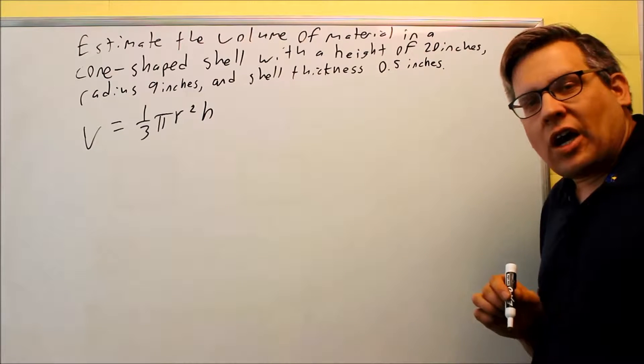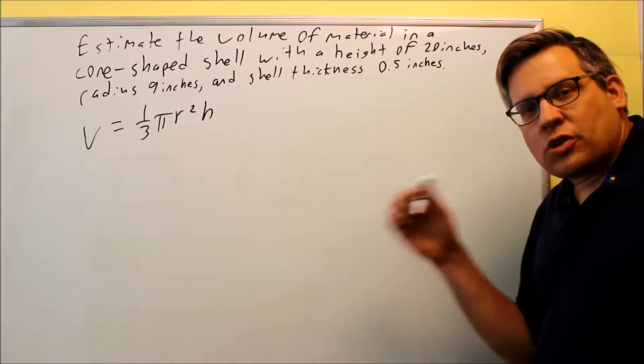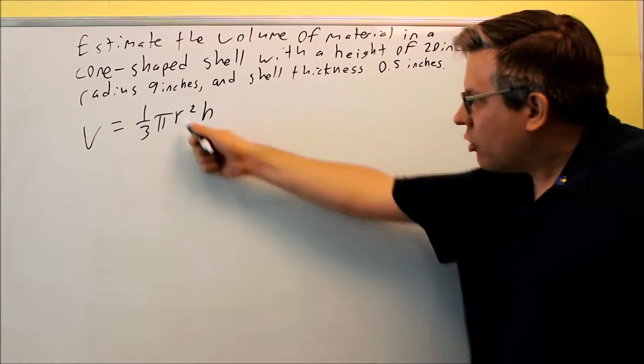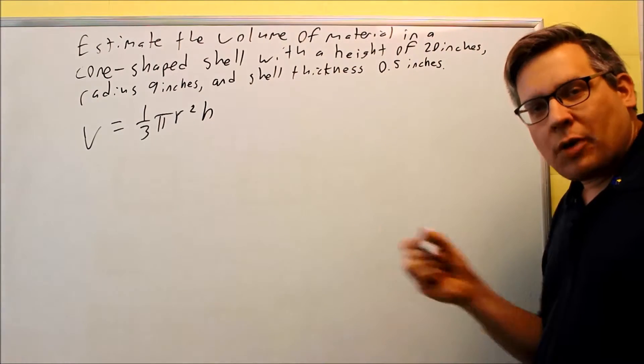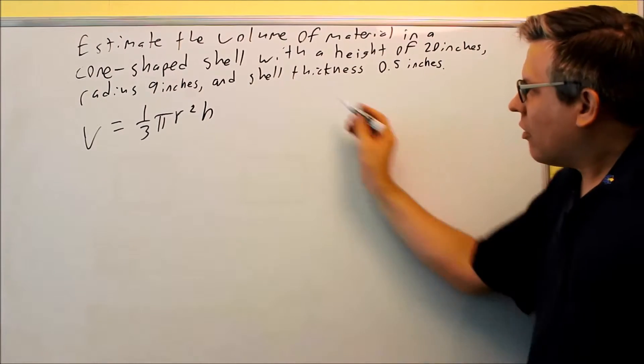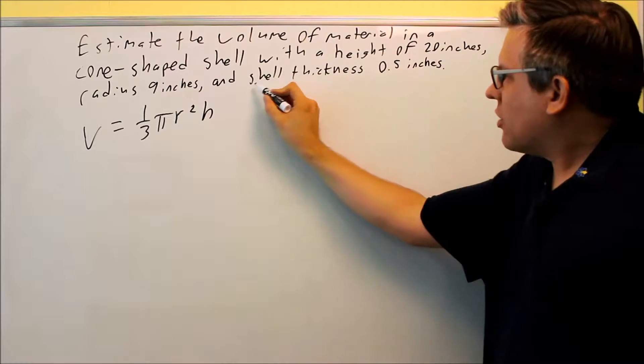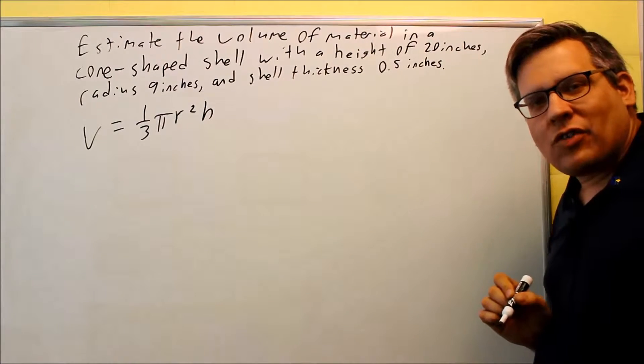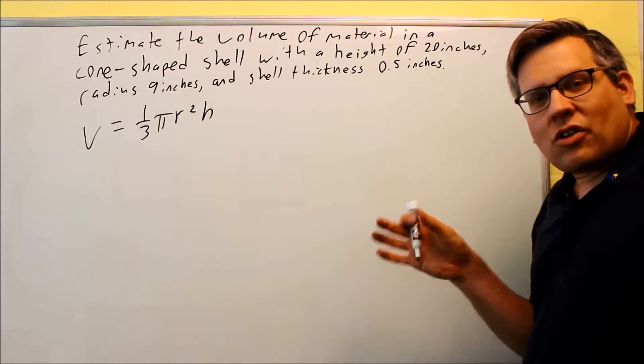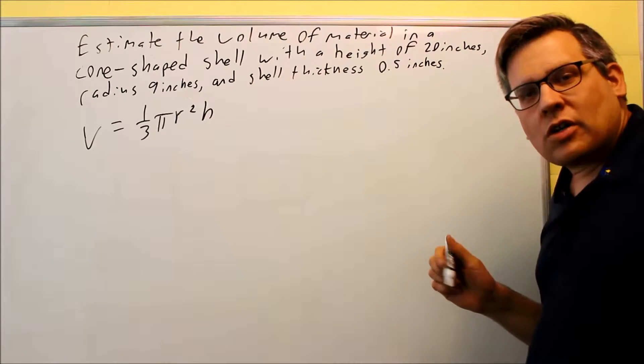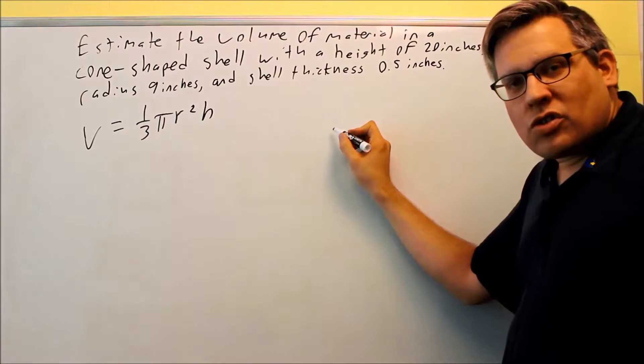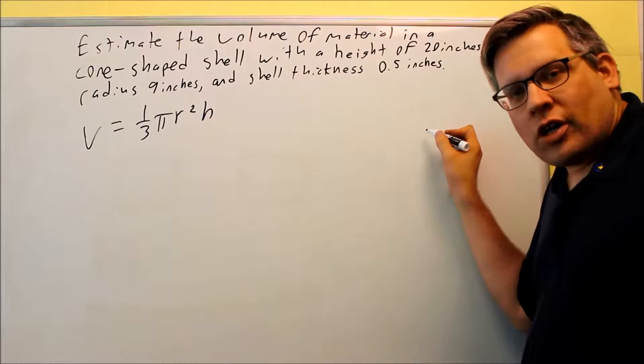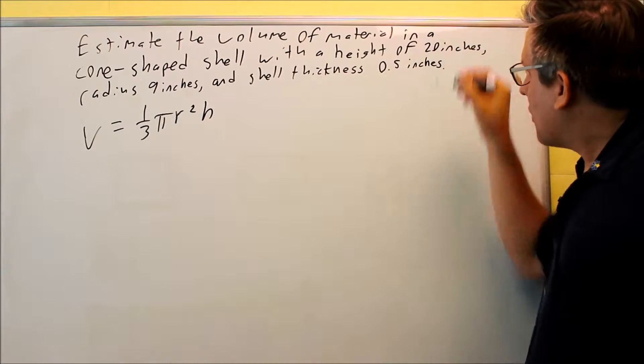Now we have to decide what we're going to take the derivative with respect to. We could do it with respect to r, h, or time. We need to think about what we need to do in this case. Let's talk about this. It tells us that shell thickness is 0.5 inches. That actually affects the radius because the radius from the middle to the inner radius and the outer radius, that has to do with that. The height is always going to be 20 inches.